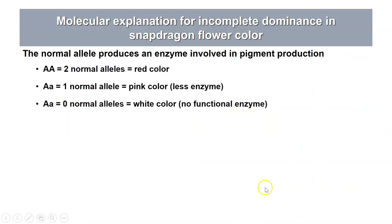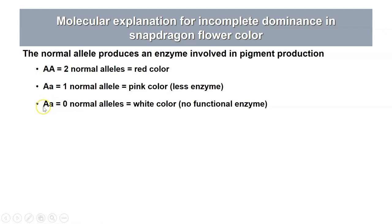Why is there incomplete dominance in snapdragons? Because there's an enzyme involved in producing the pigment. If you have two wild-type alleles, you produce more intense pigmentation — red. If you are heterozygous with one wild-type allele and one null allele, you don't produce as much pigment — pink. If you're homozygous for the null allele, you produce no pigment — white.